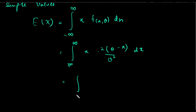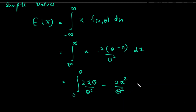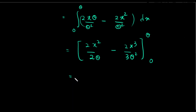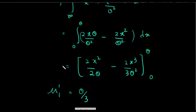We calculate the expectation of x using the probability density function: integral of 2(theta minus x) divided by theta squared dx. We calculate the limits and evaluate the integral to find mu1 dash.